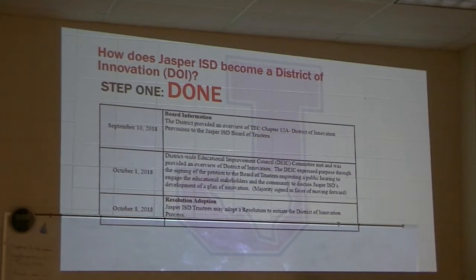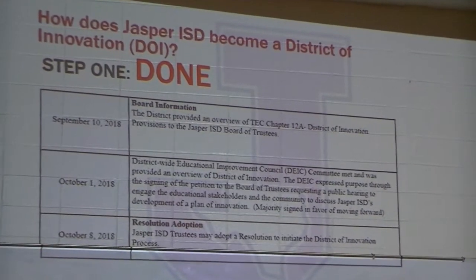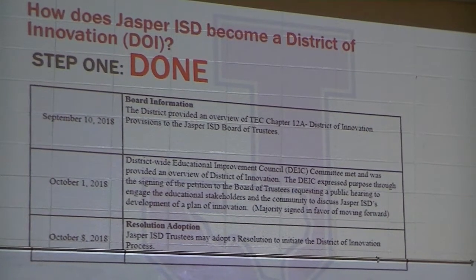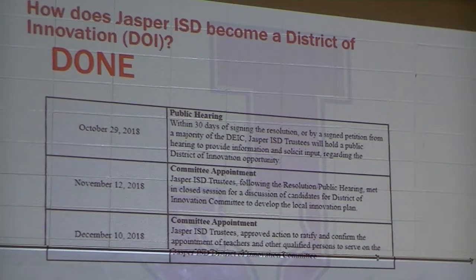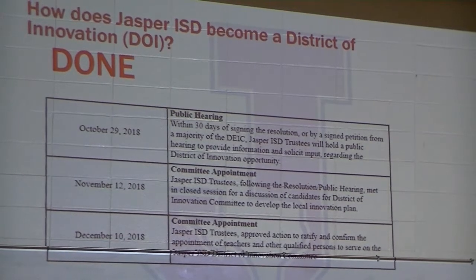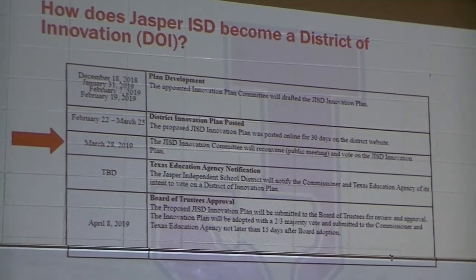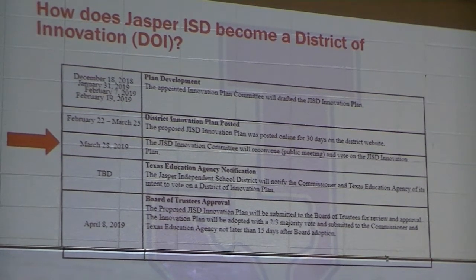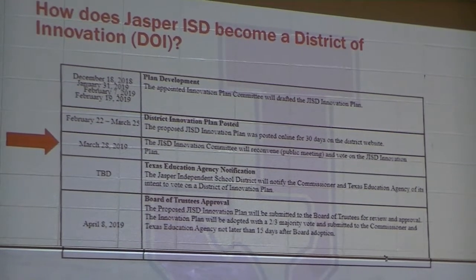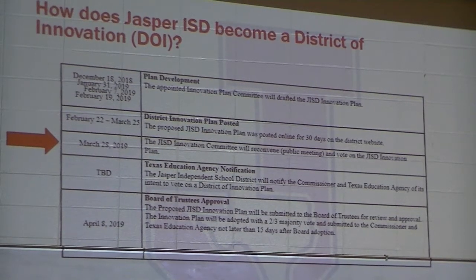This is just a timeline of how things have played out. These things were done all the way through December 8th where a resolution was adopted to look into the process of becoming a DOI, and then on the next slide it shows December 10th where the committee was appointed. We are now on March 28th, where we had to post our plan for 30 days. Every school district employee got a reminder — not once, not twice, but three times from me — to read the plan.